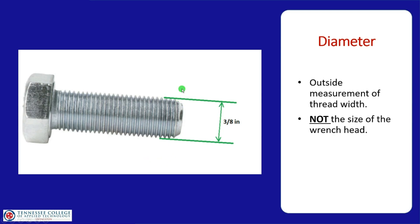When talking about diameter, make sure you measure from the outside of the threads. A lot of students use dial calipers and go down into the thread grooves — you really need to get on top of the threads to get the true diameter. Also, the diameter is not the size of the wrench head. A 3/8 bolt will have a much larger head, likely needing a 9/16 wrench, so use the bolt diameter, not the head size.